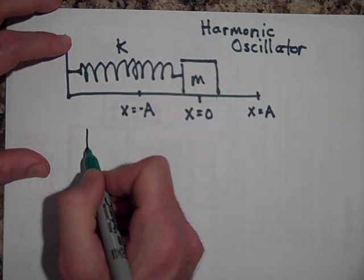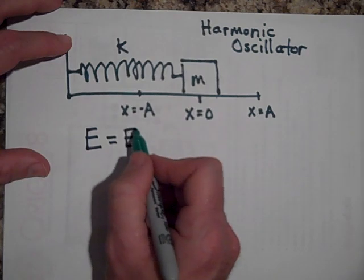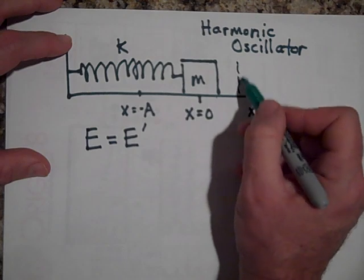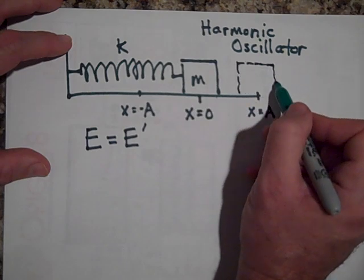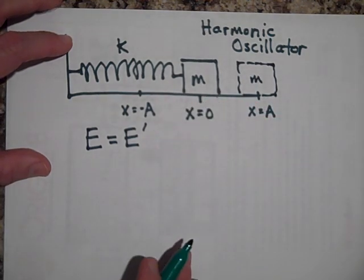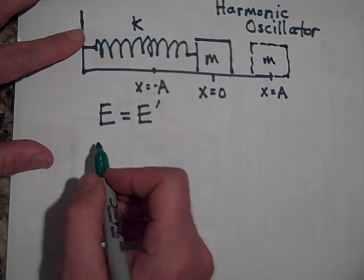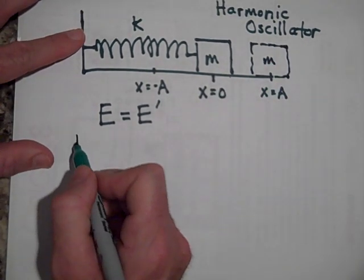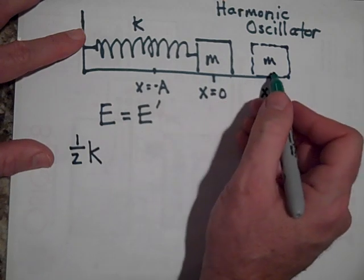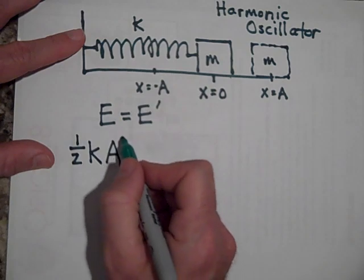Well, sometimes the easiest way to do that is just to say E equals E prime. Now let's call right when you pull it back, right here, let's call this E. It's got no velocity. It's just got all the energy stored in the spring. So we're gonna say that the energy stored in the spring initially is one half K times X squared. But X, when you're all the way back there, X is A. So I'm gonna say one half K A squared.